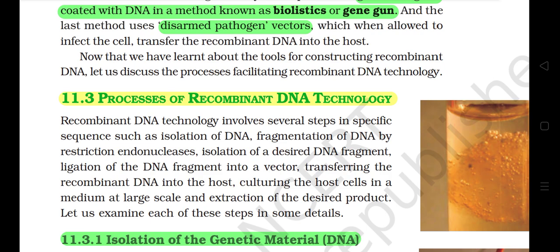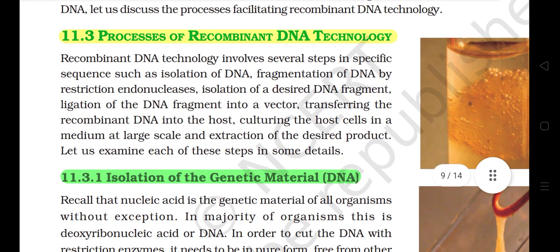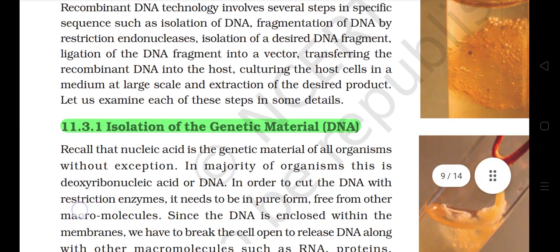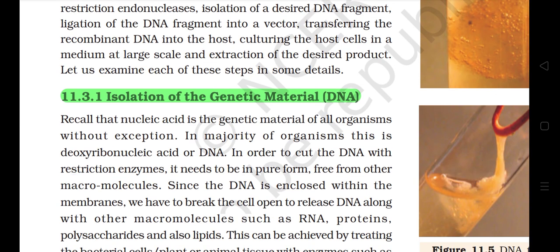Now that we have learnt about the tools for constructing recombinant DNA, let us discuss the processes facilitating recombinant DNA technology. 11.3 Processes of Recombinant DNA Technology. Recombinant DNA technology involves several steps in specific sequence: isolation of DNA, fragmentation of DNA by restriction endonucleases, isolation of the desired DNA fragment, ligation of the DNA fragment into a vector, transferring the recombinant DNA into the host, culturing the host cells in a medium at large scale, and extraction of the desired product.